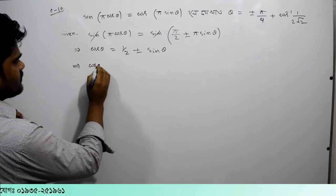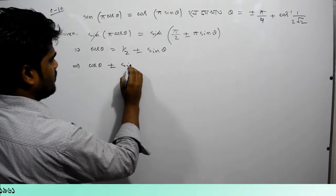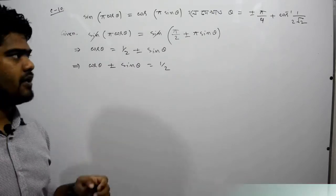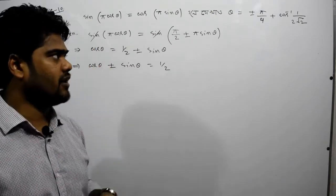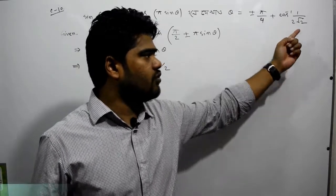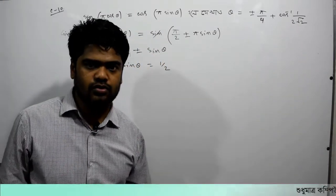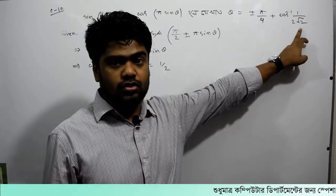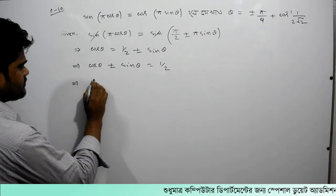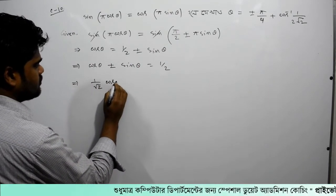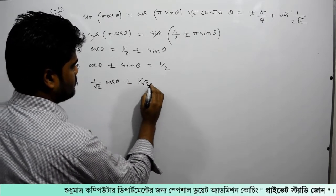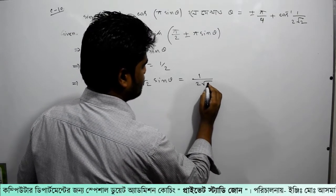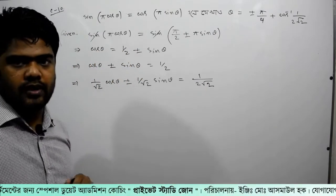So, cos theta is a high-level sign; sin theta equals to half. We have to write that later on — because we have to write that, that's why we have 4 done. We can write root 2. This is the rule of root 2. So: 1 by root 2 cos theta plus minus 1 by root 2 sin theta equal to 1 by 2.